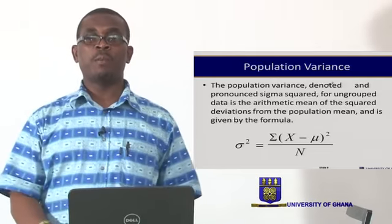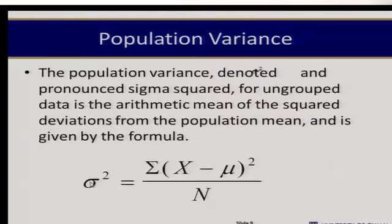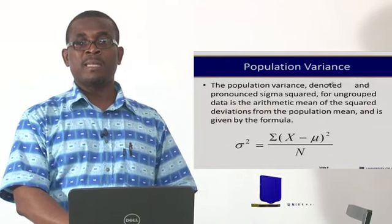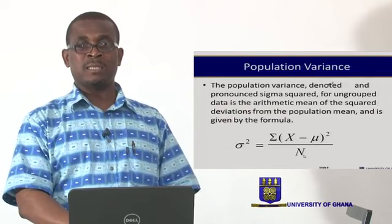We can also look at the population variance, denoted sigma squared, which is equal to the arithmetic mean of the squared deviations from the population mean. For each observation in the data, you subtract the mean, square the result, sum the squared deviations, and then divide by n. So: take each observation, subtract the mean of the entire data set, square the result, sum the squared deviations, and divide by n.